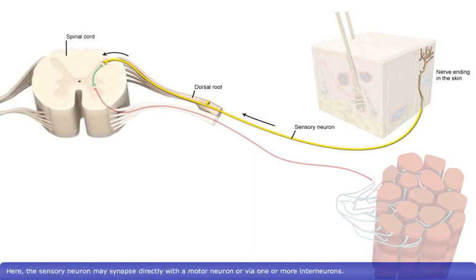Here, the sensory neuron may synapse directly with a motor neuron or via one or more interneurons.